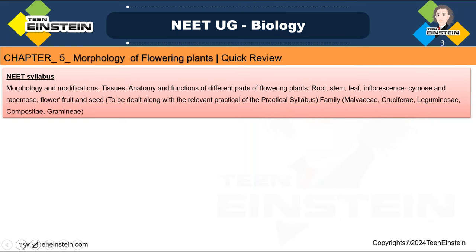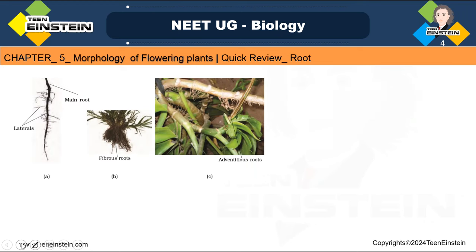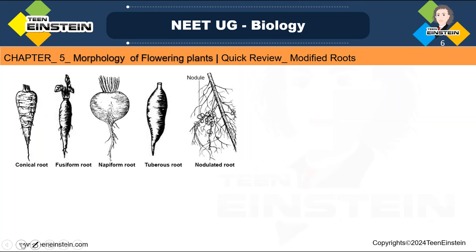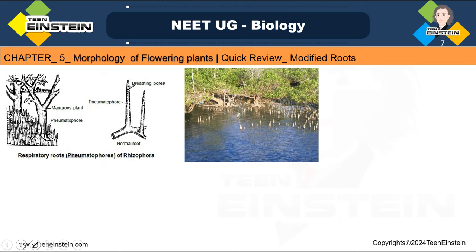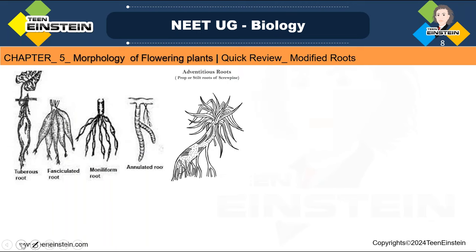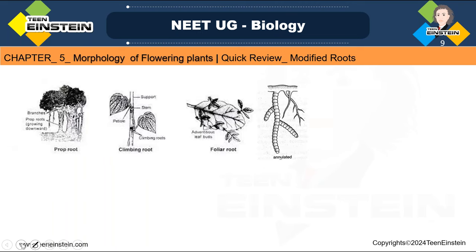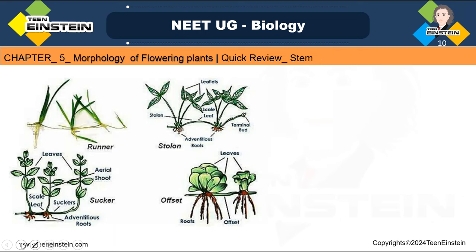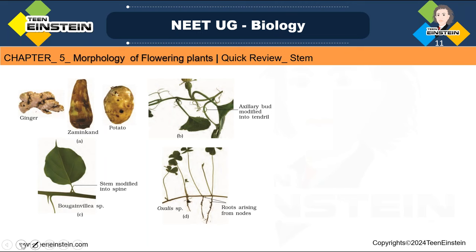These are very important and easy topics. We have already covered the root portion — root structure and different modifications of root. You should learn about respiratory roots, adventitious roots, prop root or stilt root, climbing root, foliar root, annulated root. Then about stem: runner, stolon, sucker, offset, and different stem modifications.